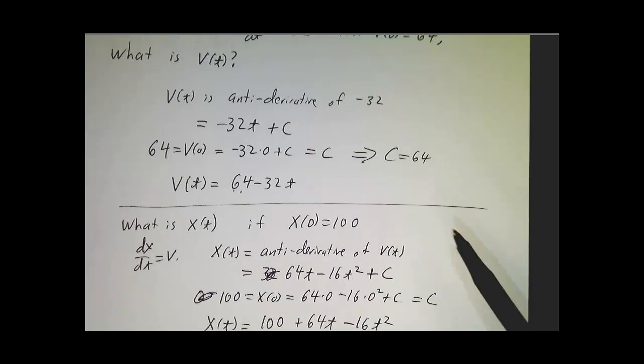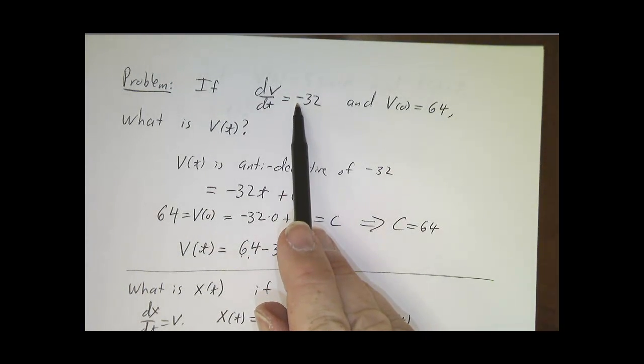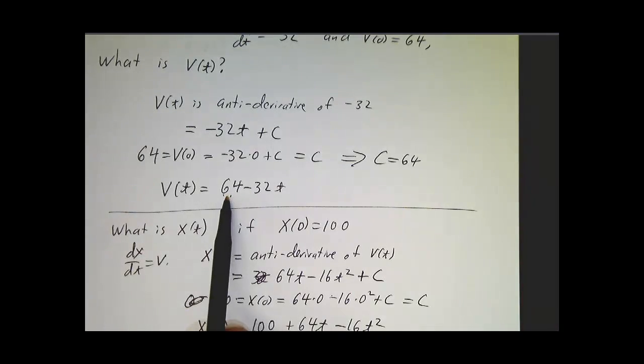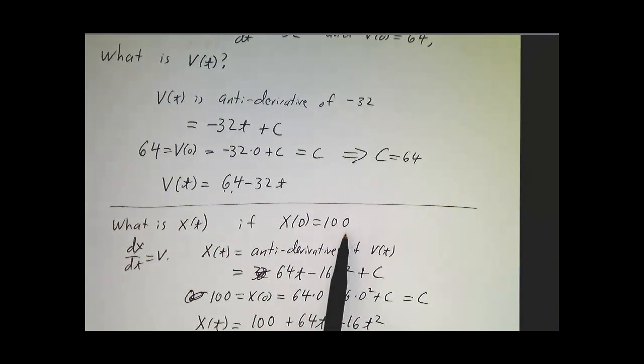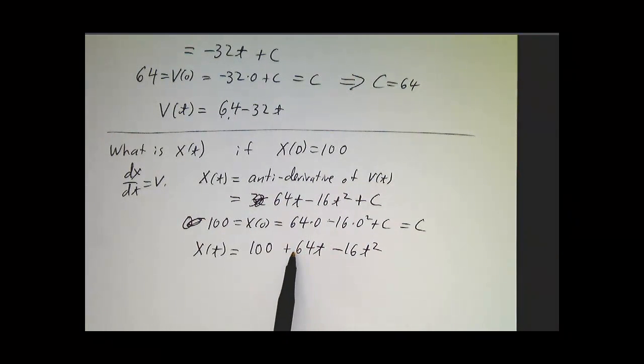So from the acceleration, physics tells us our acceleration. From the acceleration and the initial velocity, we took an antiderivative to figure out the velocity for all time. From the velocity at all time and the initial position, we took an antiderivative to figure out the position for all time.